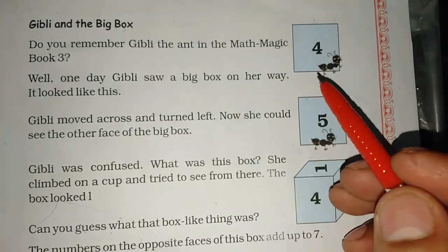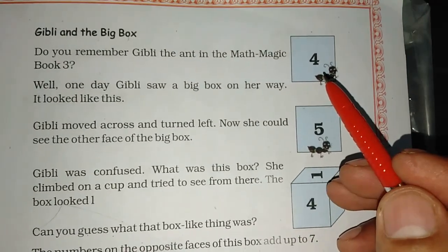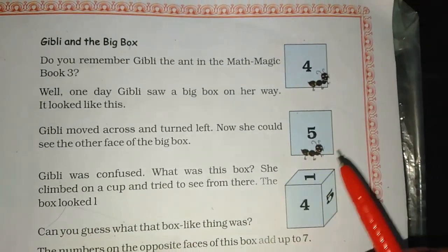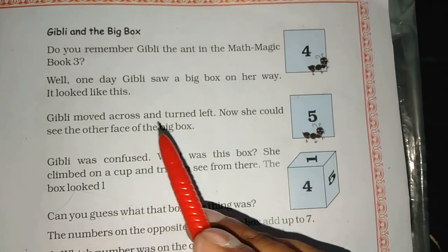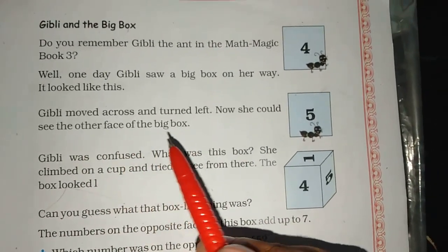First of all, what did she see in the box? Four. Then what did she see on the other side? Five. Ghibli moved across and turned left. Now she could see the other face of the big box.